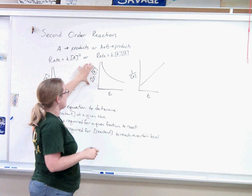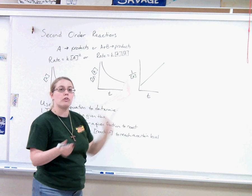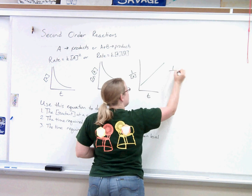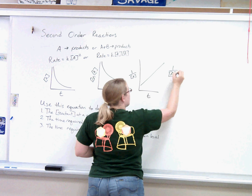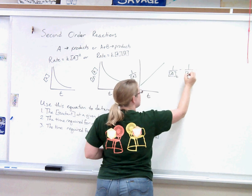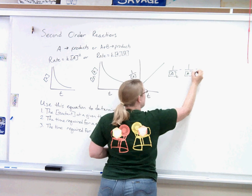We need an equation for this one. For first-order, the equation was about natural log. For second-order, the equation is about inverse. The equation is 1 over the concentration of A at time t minus 1 over the concentration of A at time 0 equals kt.